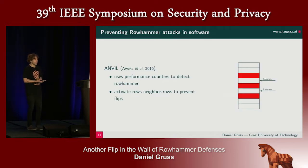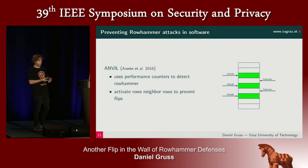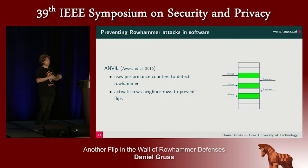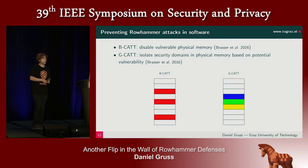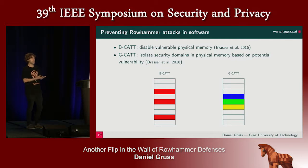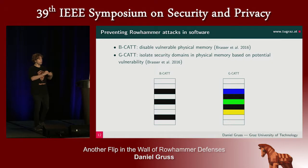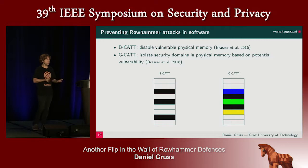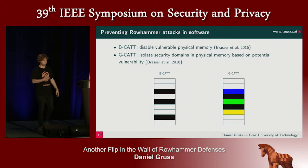There have been software-based defenses like Anvil — I'm just picking a few here. Anvil uses performance counters to detect which rows are hammered and then refreshes the neighboring rows. This is also available in hardware, in a similar variant, then it's called target row refresh. There was also, at USENIX last year, BCAT and GCAT, where the idea is to either disable the vulnerable physical memory locations or to isolate them — to place a physical barrier between the different security domains, such as kernel and user space.